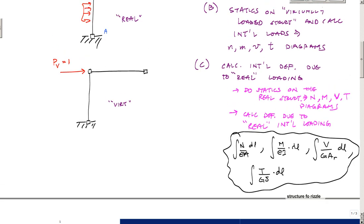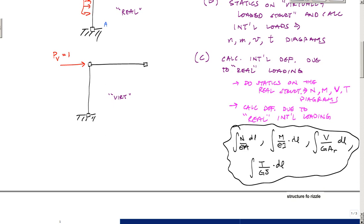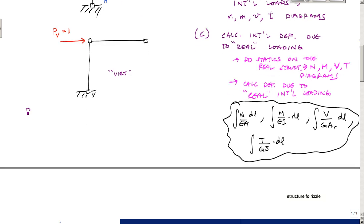Once you do that, once you got through all that part right there, the last part is to put it all together. Put it together, combine into here. You have this virtual force PV times the displacement that you're looking for. So it just happens that I'm looking for this displacement delta B. PV times delta B right here is equal to the sum of the internal load u times the real displacements, which I'll call DL right here. This u times DL.